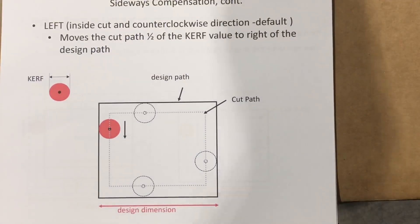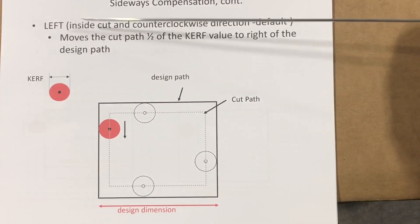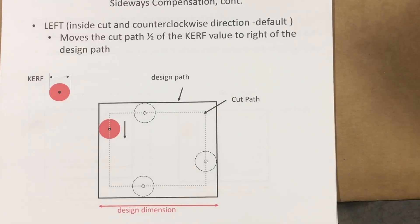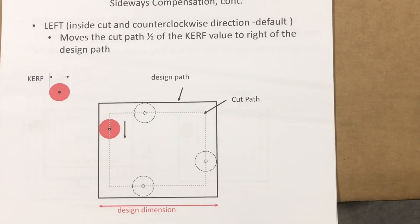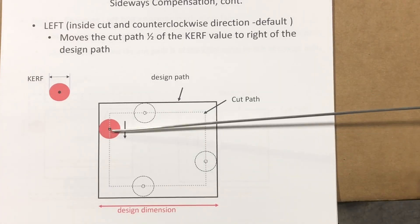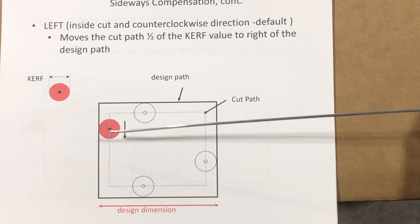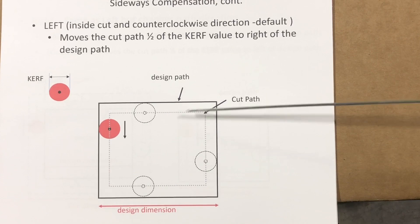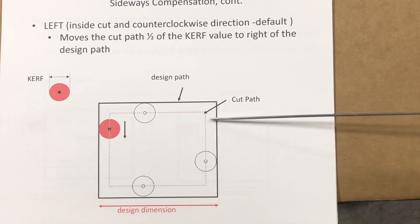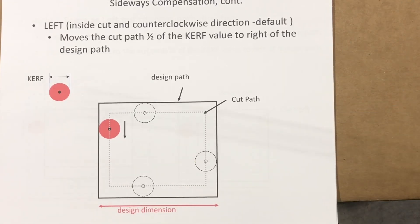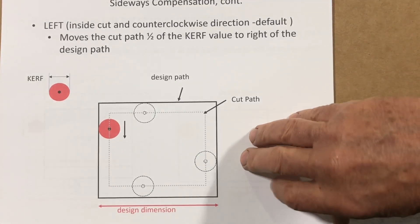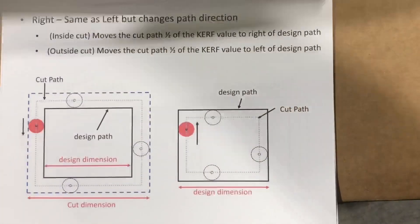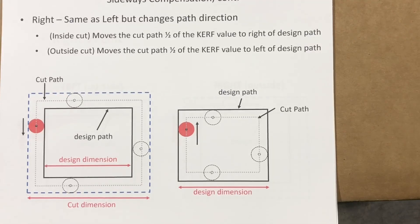For an inside cut with left compensation, the default direction is counterclockwise. It moves the cut path one half of the kerf value to the right — one half the kerf diameter inside of what you want to cut — so that once cutting is done, whatever is inside the solid line falls out. Right compensation does exactly the same as left, except it changes the path direction.